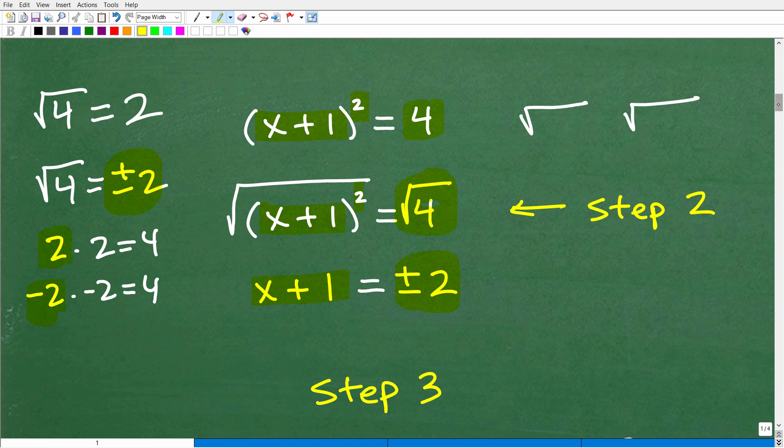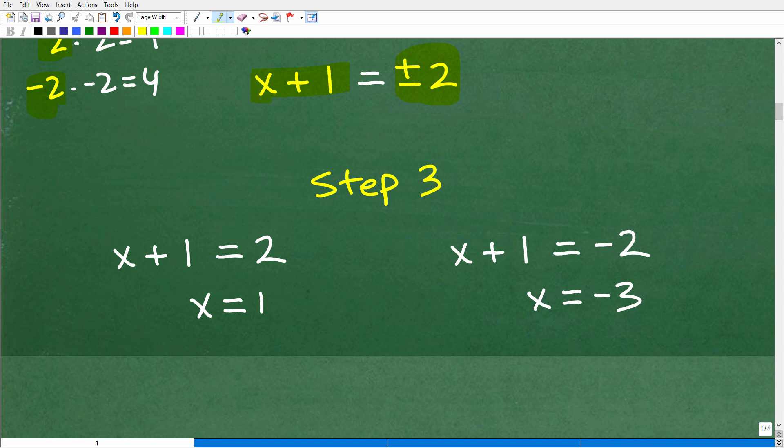So x plus 1 now is equal to positive and negative 2. So this is going to set us up for our last step, step 3. So we need to interpret this equation, and this is really two separate equations that we need to set up to solve for x. So the first one is going to be x plus 1. This positive and negative 2 is really the same thing as a positive 2 and negative 2. We just write it as positive and negative 2. But this equation is saying x plus 1 is equal to a positive 2. So you have to write it out explicitly like this. And then x plus 1 is also equal to a negative 2.